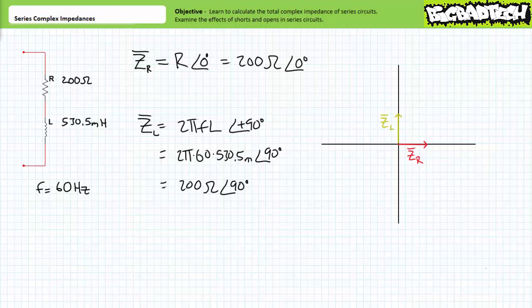Illustrated on the impedance diagram, the resistor has a magnitude of 200 ohms and is pointed entirely in the real horizontal positive x direction. The inductor has a magnitude of 200 ohms and is pointed entirely in the imaginary vertical positive y direction. Before we add these series impedances, let's take a look at them individually. Both elements have a magnitude of 200 ohms. Does this mean the 200 ohm resistor is functionally equivalent to the 530.5 millihenry inductor at 60 hertz? Absolutely not. They are entirely different entities — the impedance diagram clearly illustrates that they are pointed in two totally different directions. You must always take into account direction, and the moment you forget to do so is the moment you fail.